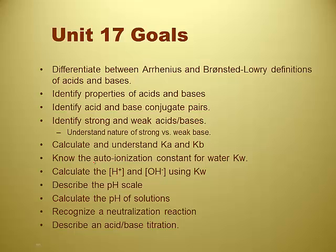We start out by talking about definitions about acids and bases, and it turns out that there's two main definitions. Once we've got those definitions taken care of, we can talk about properties, and we can talk about the fact that acids and bases have what we call conjugates — they're kind of like brothers or sisters. We can identify strong and weak acids and bases, and that's gonna be a memorization thing. Then we calculate and understand the Ka and the Kb — that's just mathematics.